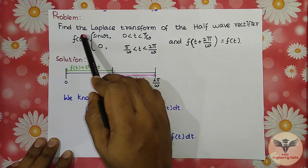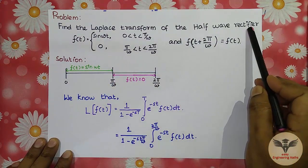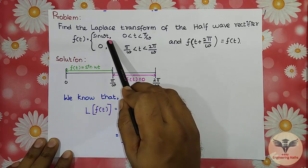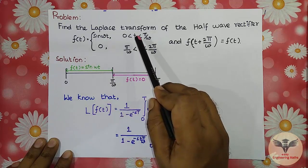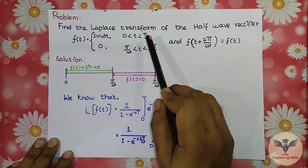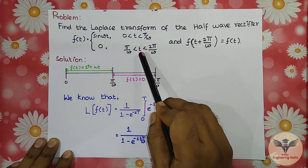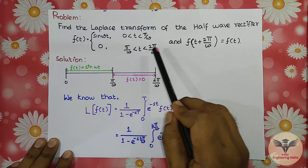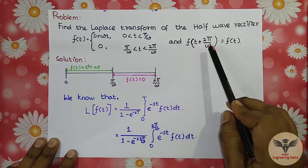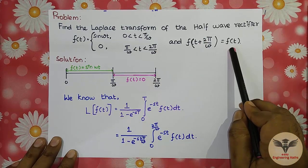Find the Laplace Transform of the half-wave rectifier: f(t) = sin(ωt) for 0 < t < π/ω, and f(t) = 0 for π/ω < t < 2π/ω, with the periodic condition f(t + 2π/ω) = f(t).